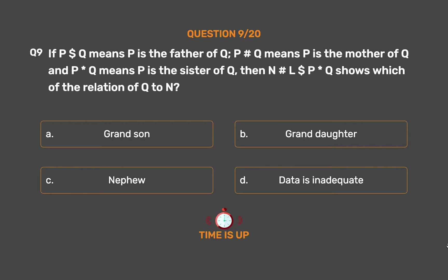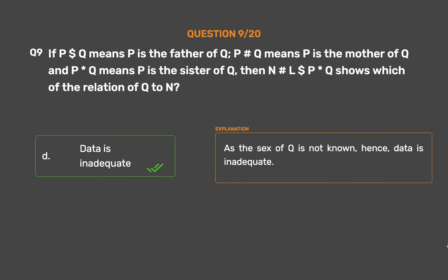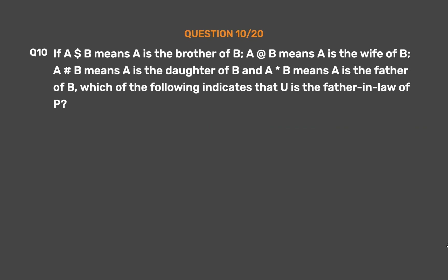The correct answer is Option D: Data is inadequate. As the sex of Q is not known, hence data is inadequate.